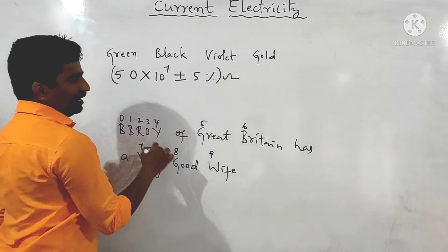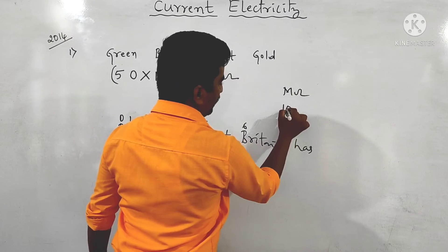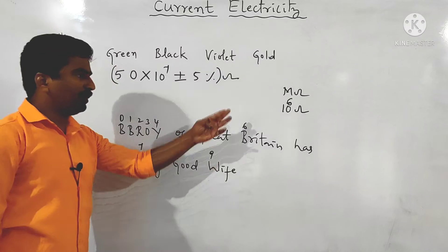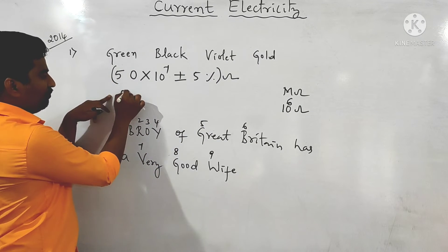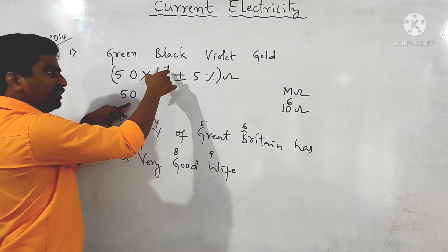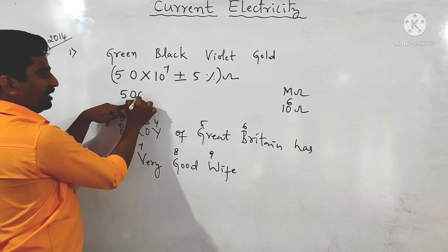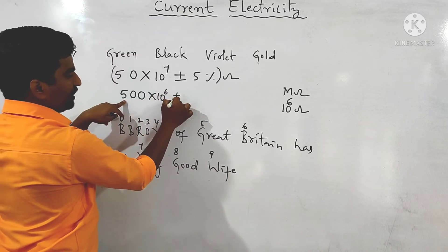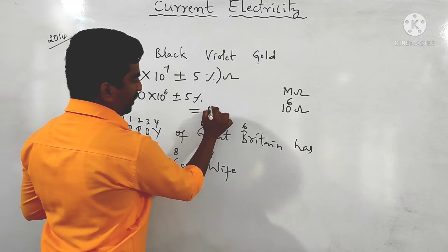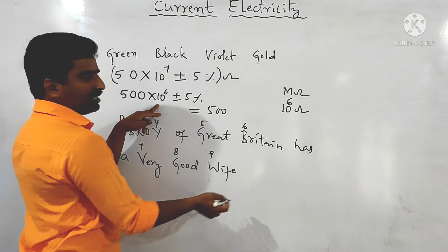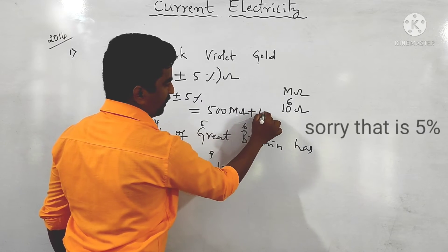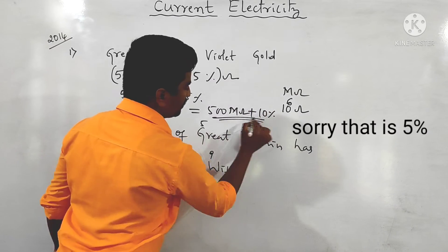The answer is not in mega ohms directly, so we convert: 50 × 10^7 = 500 × 10^6 = 500 MΩ ± 5%. The answer for the given question is 500 megaohm ± 5%.